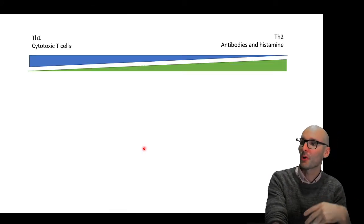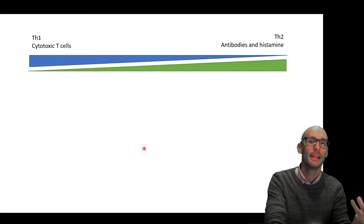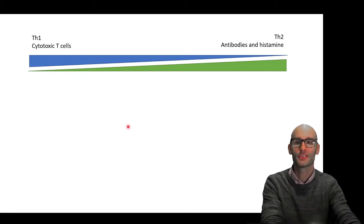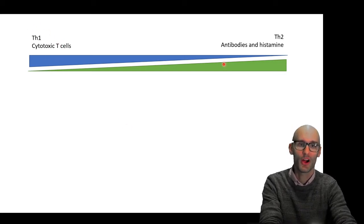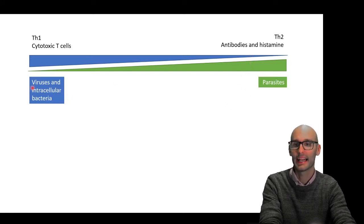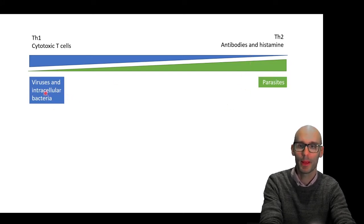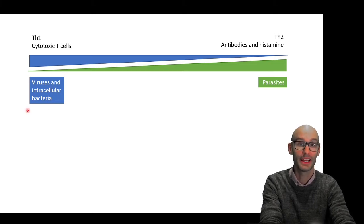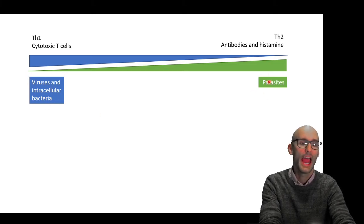So when we look at the responses, this is what we've got. Th1 on the left there, cytotoxic, good for antiviruses. Th2, antibodies and histamine, and we can kind of break it down to that. Viruses and intracellular pathogens over there, intracellular bacteria, and parasites.